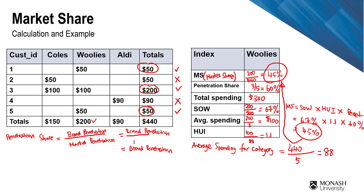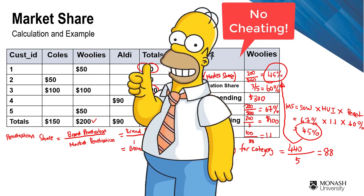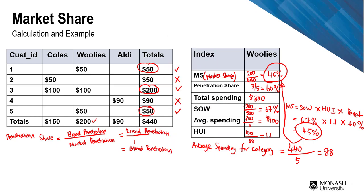What I want you to do is practice calculating the market share, penetration share, total spending, share of wallet, average spending, and heavy usage index for different brands such as Coles and Aldi. Answers will be posted at the end of the week so you don't just copy them.